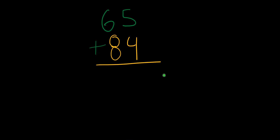In this example we have 65 plus 84. What's the first thing we want to do? That's right, you guessed it. The first thing we want to do is add 4 plus 5 which is going to be 9. Now we have to add 8 plus 6 which is going to be 14. Therefore our answer would be 149.